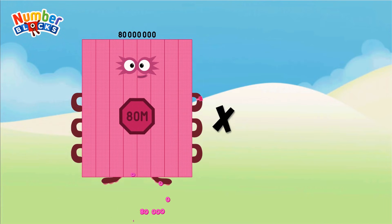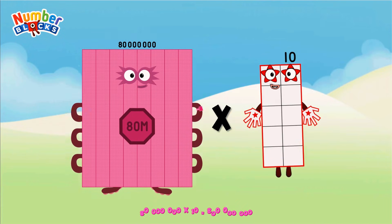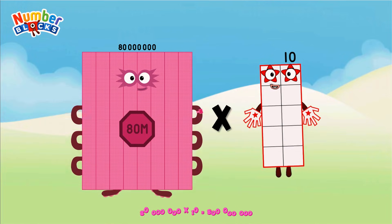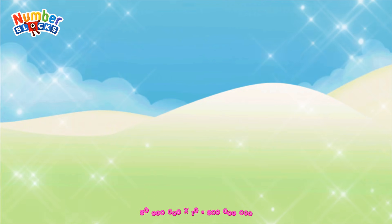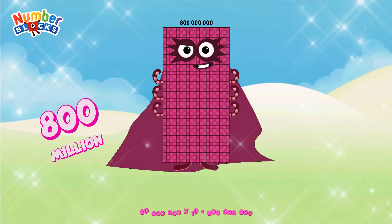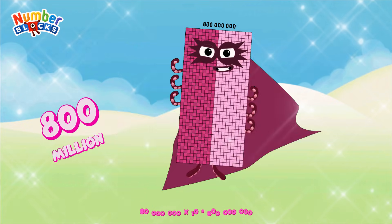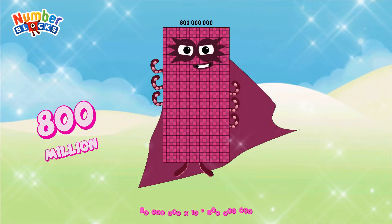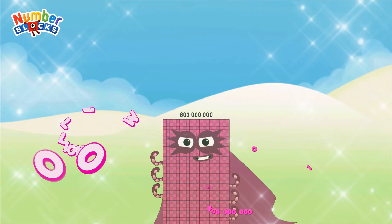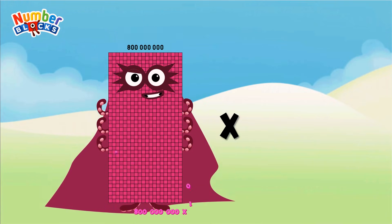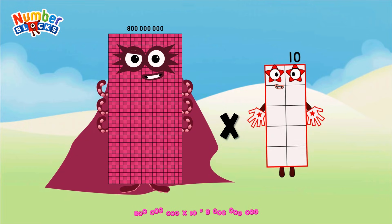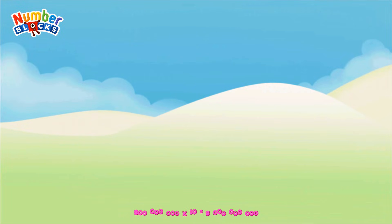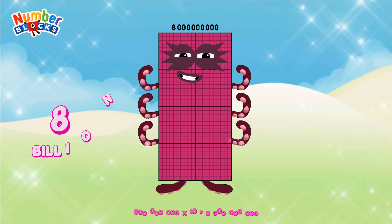80,000,000 multiplied by 10 equals 800,000,000. 800,000,000 multiplied by 10 equals 8 billion.